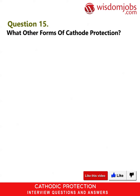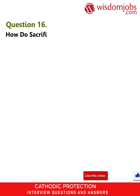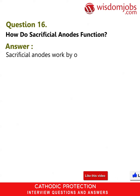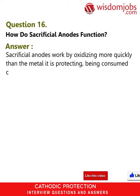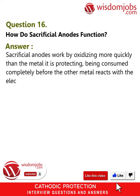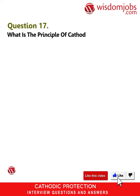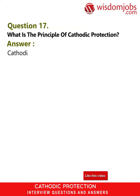Question 15: What other forms of cathodic protection are there? Answer: Several different forms of cathodic protection are forming alloys, plating, and galvanizing the metal. Question 16: How do sacrificial anodes function? Answer: Sacrificial anodes work by oxidizing more quickly than the metal they are protecting, being consumed completely before the other metal reacts with the electrolytes.